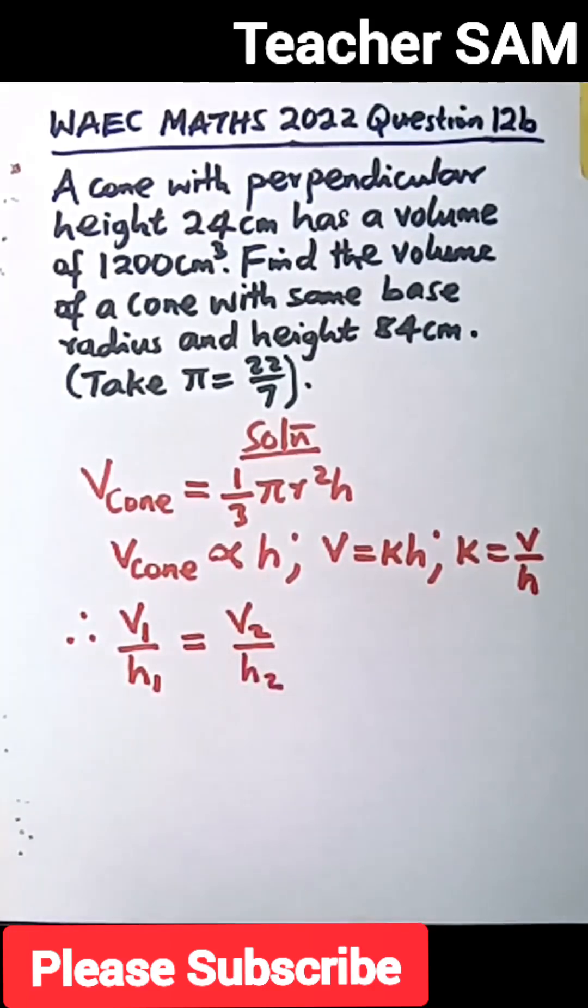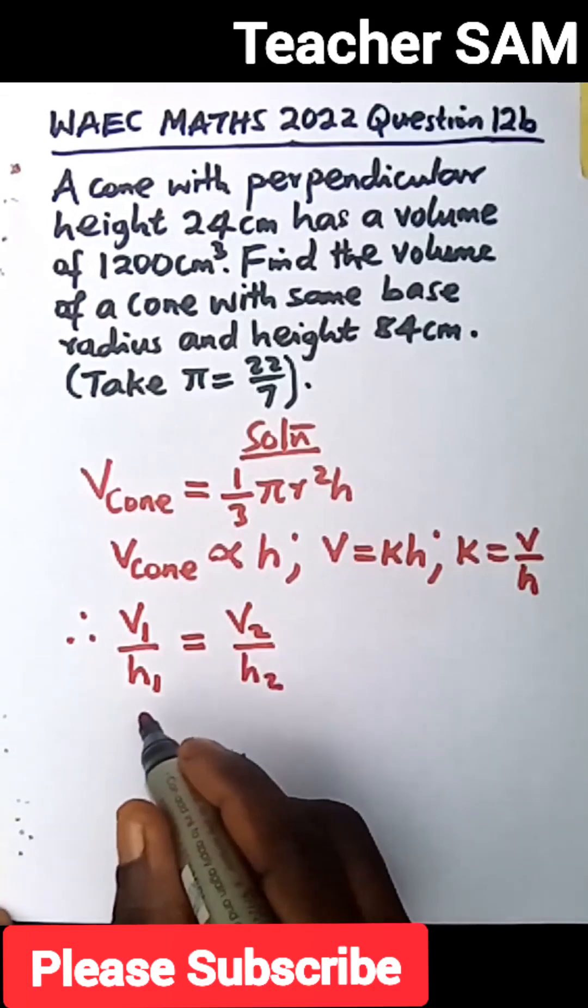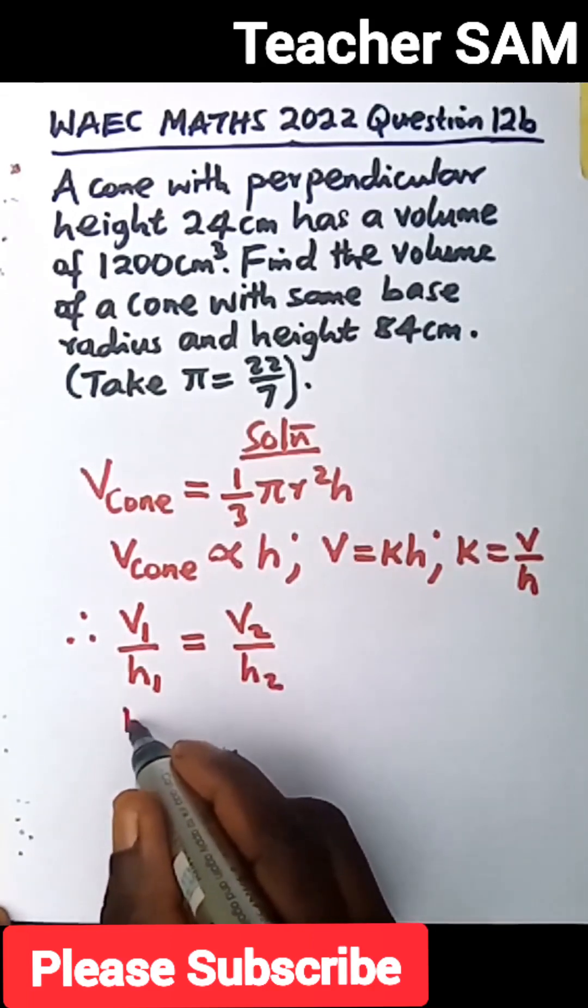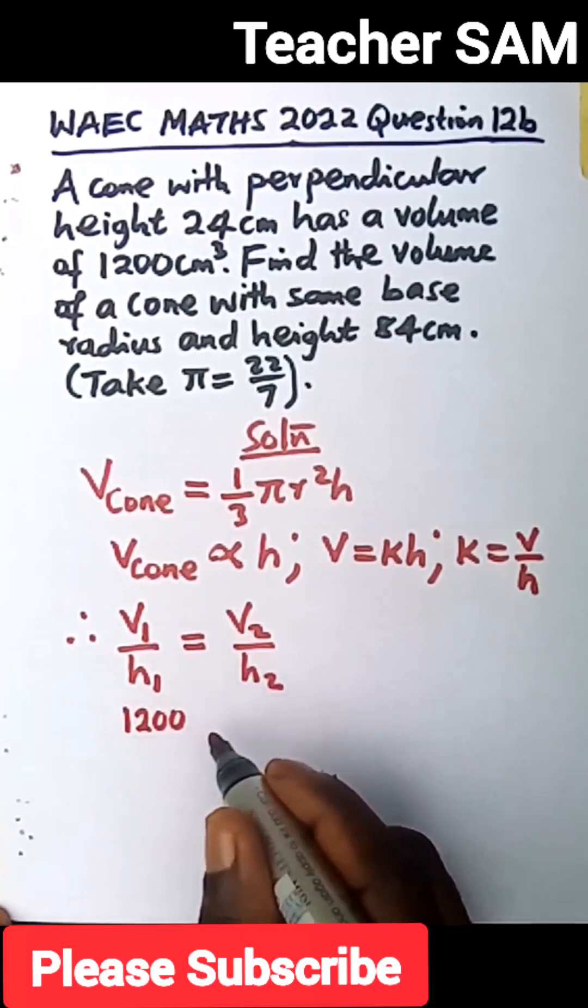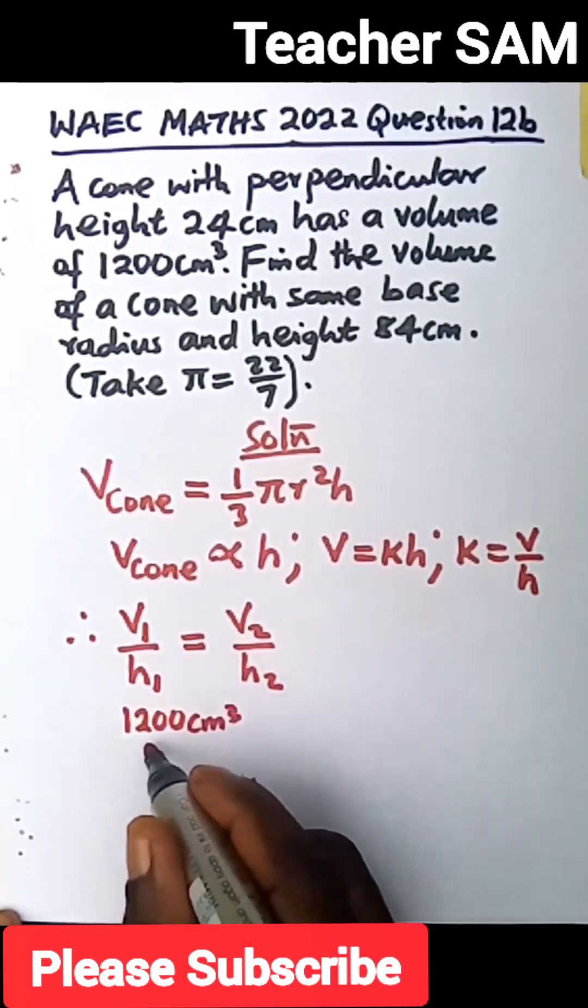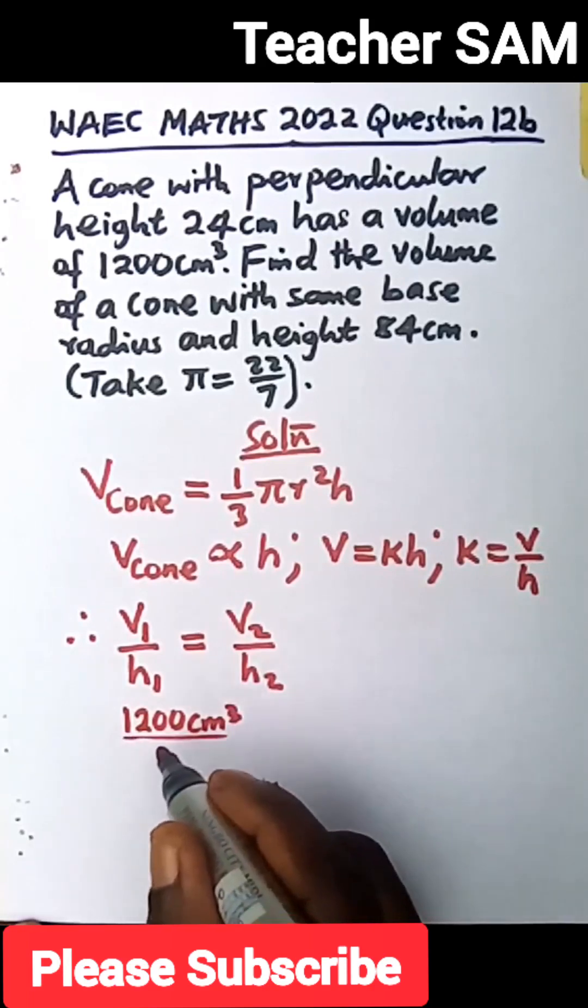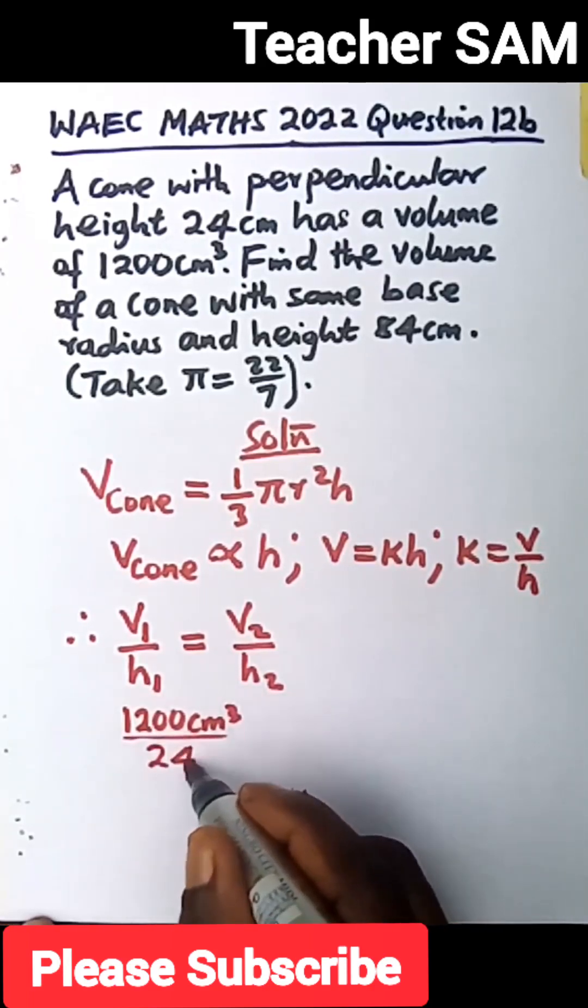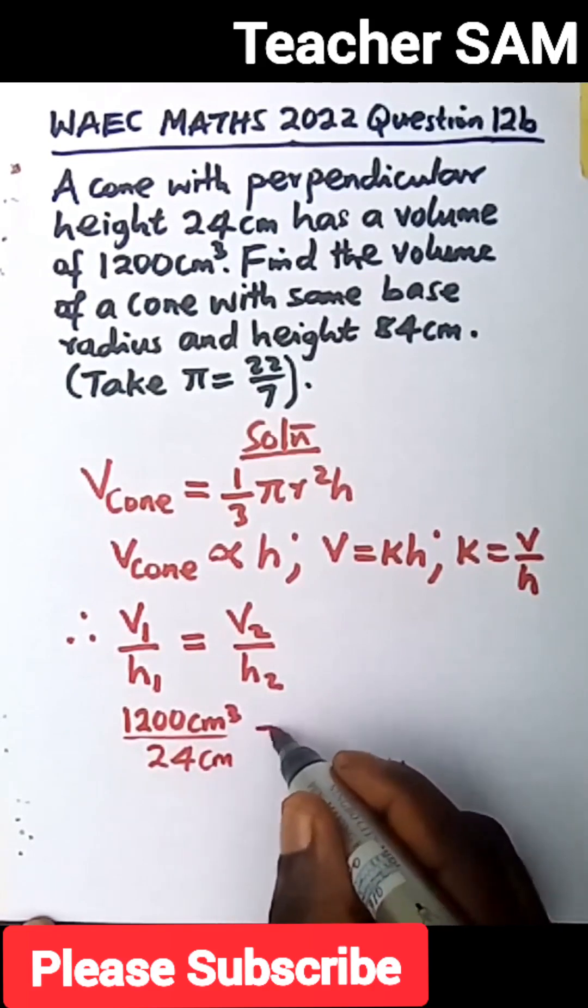Let's obtain their values. We are given that the volume of the first is 1,200 cm cubed all over the height of the first as well, 24 cm, equals to...